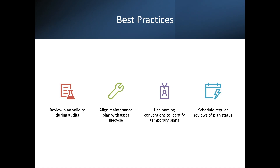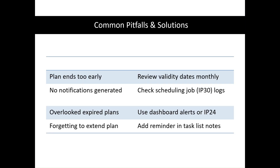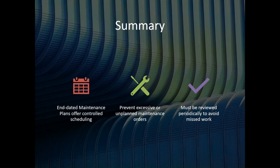Common pitfalls and solutions include: plans expiring early — review validity dates monthly; no notification being generated — check the scheduling job in ip30 logs; overlooked expired plans — use dashboard alerts or check ip24 for expired plans; forgetting to extend plans on time — add simple reminders in your task list and notes. These are the common solutions to avoid these pitfalls.